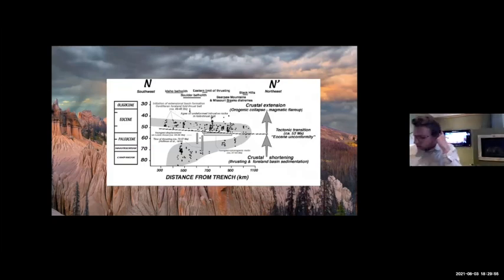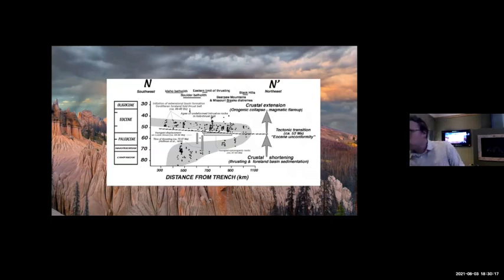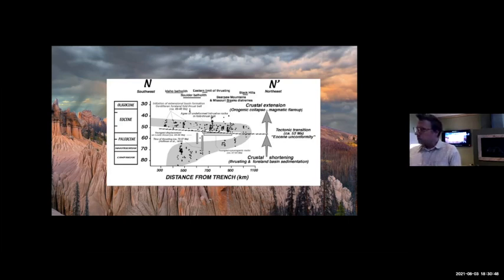To summarize the magmatic history: continental arc magmatism swept eastward — you can see this in places like the Idaho Batholith, the Bear Paw Mountains, the Black Hills — then turned around and swept back westward. So there's this big overall movement of arc magmatism sweeping east and then sweeping west. For the time period from about 90 to 40 million years ago, this was the dominant paradigm and what we teach students about the history of the Cordillera.